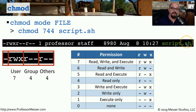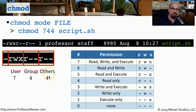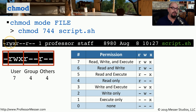Looking at the ls output for script.sh, the owner is 'professor' and the group is 'staff'. We assigned mode 7 for the owner, so professor has read, write, and execute access. The 4 in the middle means the staff group has read-only access. The last 4 means anyone not the owner or in the group also has read-only access. After some practice you can quickly identify rights and permissions when viewing the ls -l output.